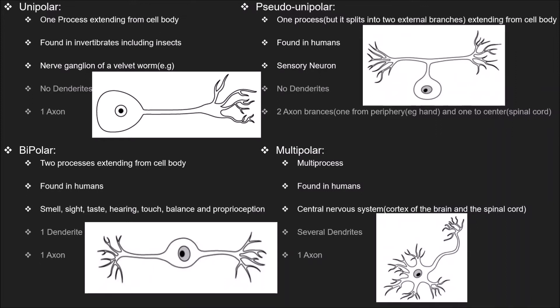Pseudo-unipolar and bipolar neurons are also sensory neurons and are basically found in smell, sight, taste, hearing, touch, balance, and proprioception. Pseudo-unipolar, bipolar, and multipolar neurons are found in humans, although their quantity varies. Multipolar neurons are found in the central nervous system, which includes the cortex of the brain and the spinal cord.